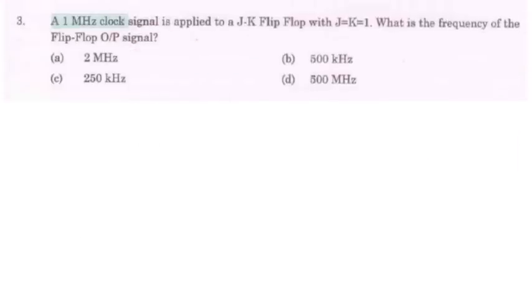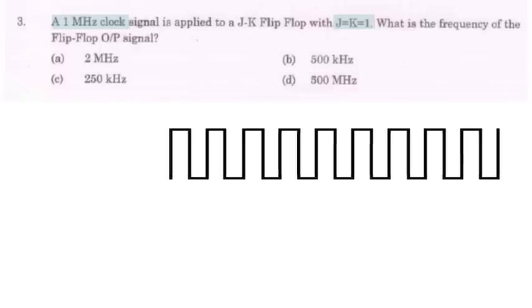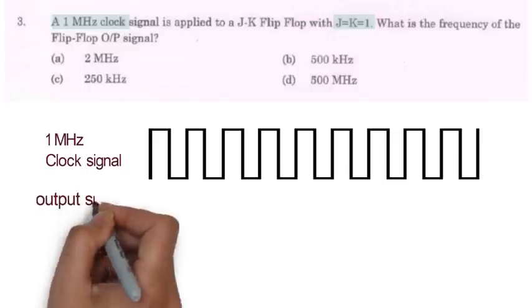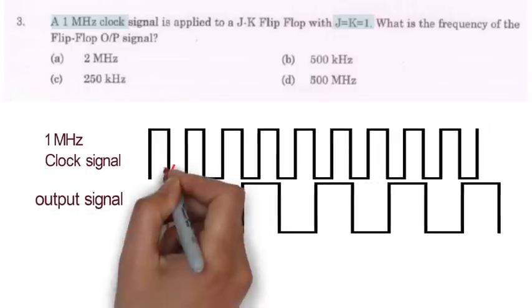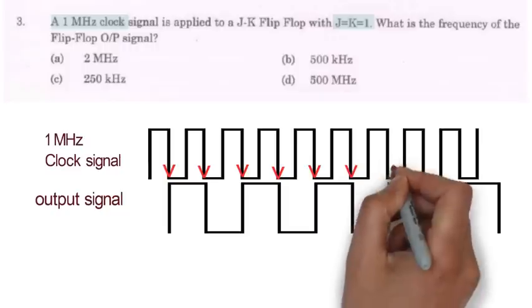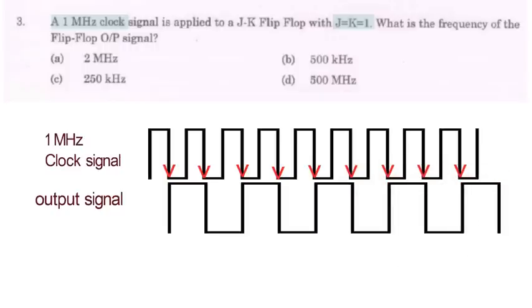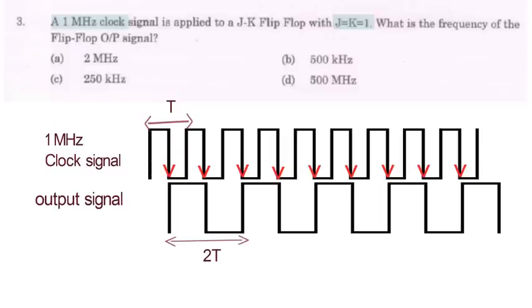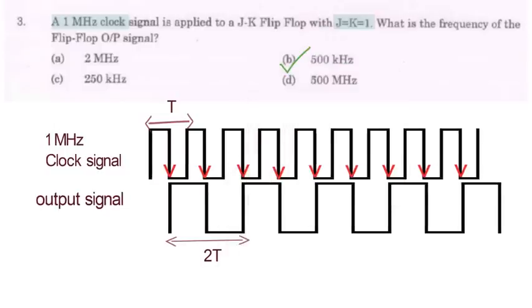Now move to question number 3. Here a clock signal of 1 MHz is applied to a JK flip flop with J and K input as 1. So we have to calculate the frequency of output signal. Whenever J and K input are 1 output of JK flip flop toggles its value on change in the clock. So output signal will always change its value on negative going pulse if flip flop is negative as triggered. So here clearly we can see that the time period of output signal is twice the time period of clock so frequency of output signal will be half the frequency of clock signal. So option B will be right answer.